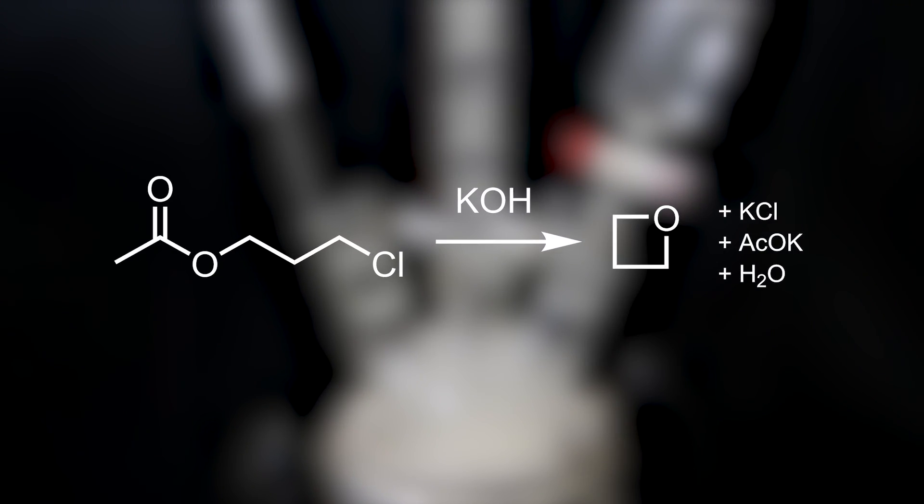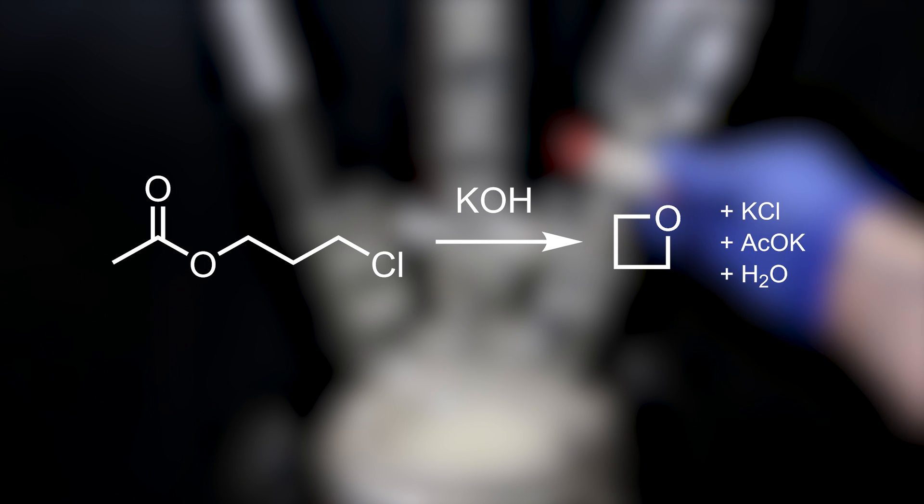In the reaction, 3-chloropropyl acetate reacts with two equivalents of potassium hydroxide, to produce oxytane, potassium chloride, potassium acetate, and water. This reaction, like many, does not only yield the product, in this case oxytane, but also produces allyl alcohol, as the main side product.